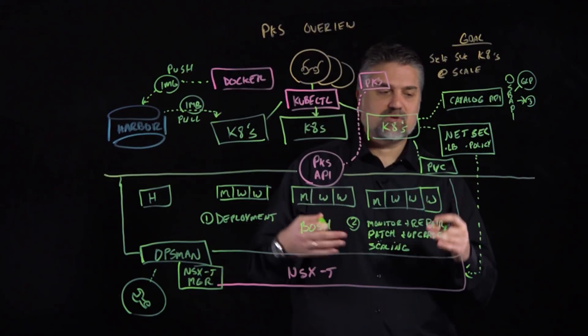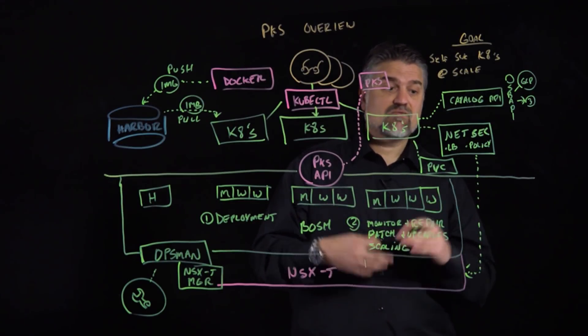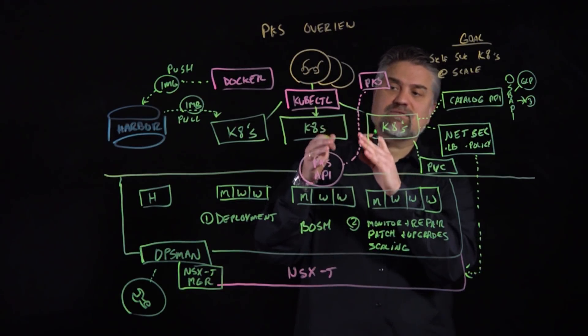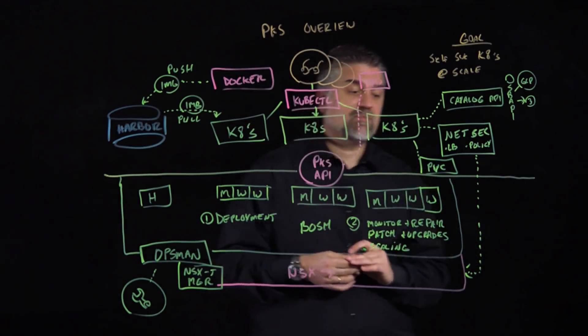There's automation that will actually build distributed firewall policies, load balancer constructs, virtual server constructs, HTTP rules, all based on the declarative YAML that's being pushed in when an application is being instantiated inside of Kubernetes. It's a really powerful capability.